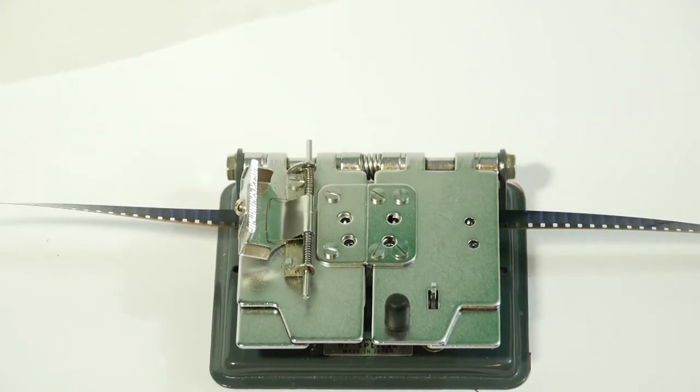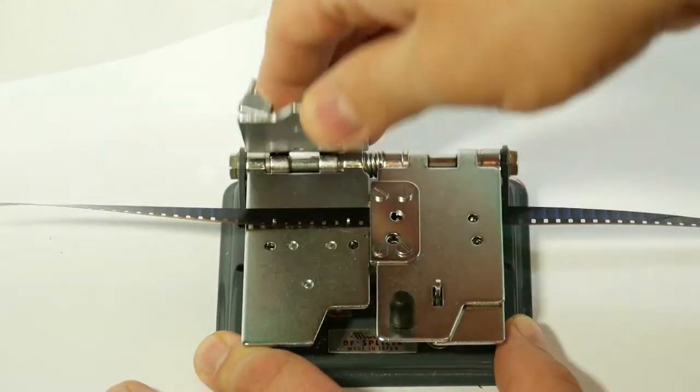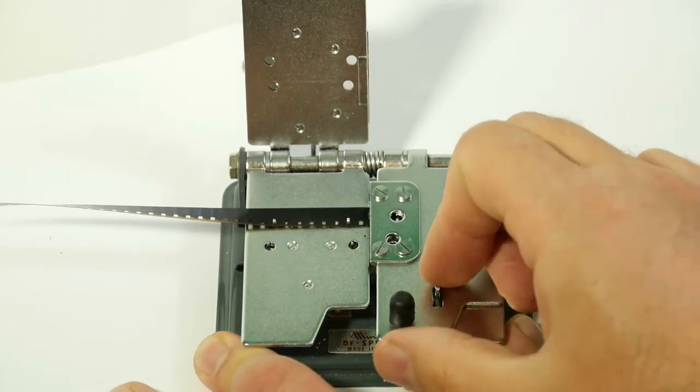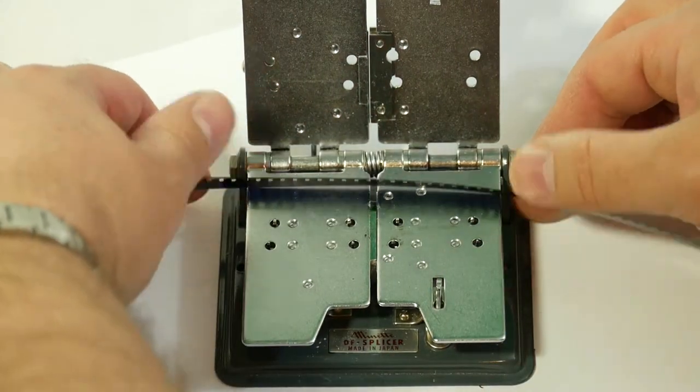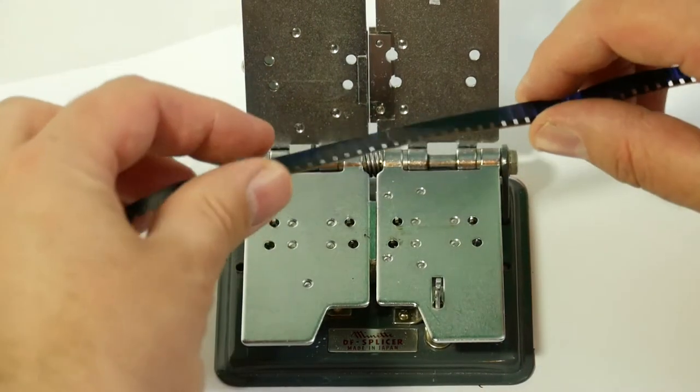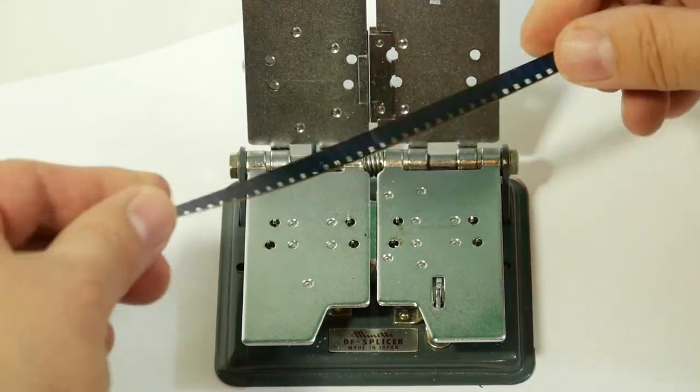Okay so 45 seconds has passed so we need to remove the film from the splicer. Lift the first plate up then lift the second plate up and then gently lift the film out of the splicer. It's already popped out there. And there we have a strong splice which should last many projections.